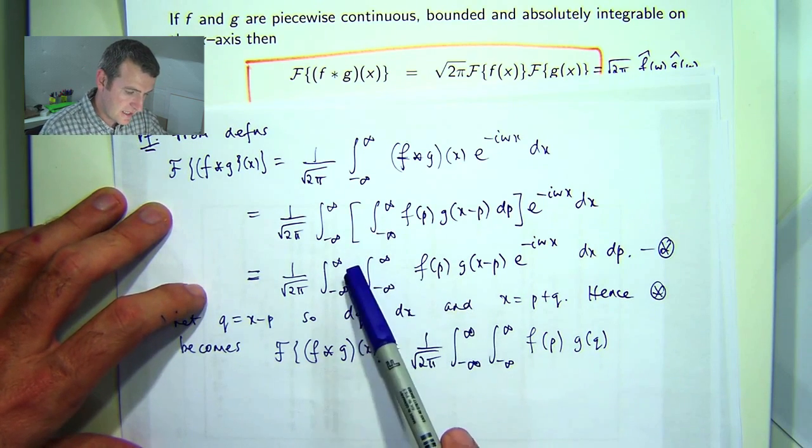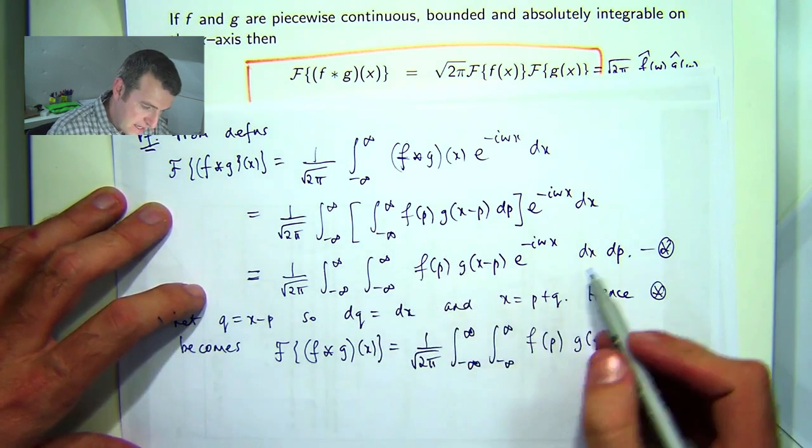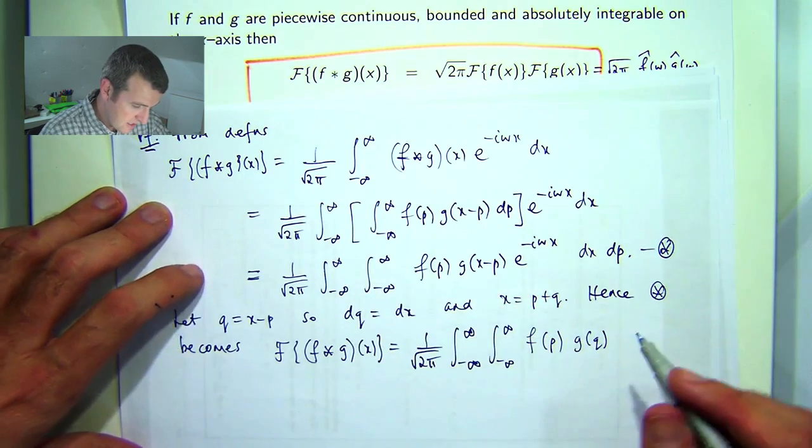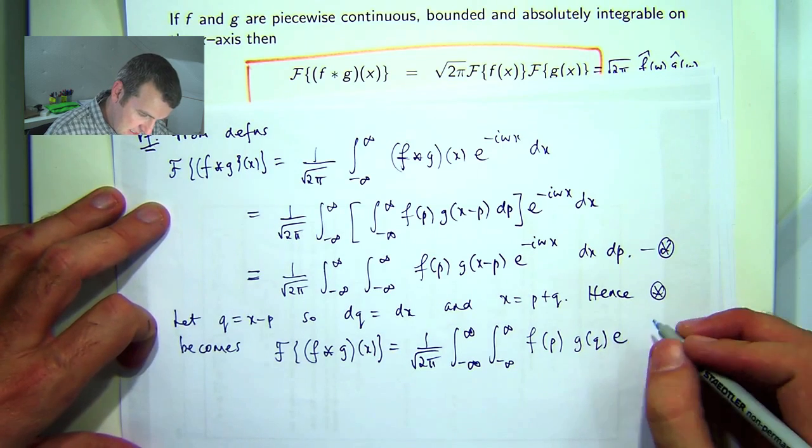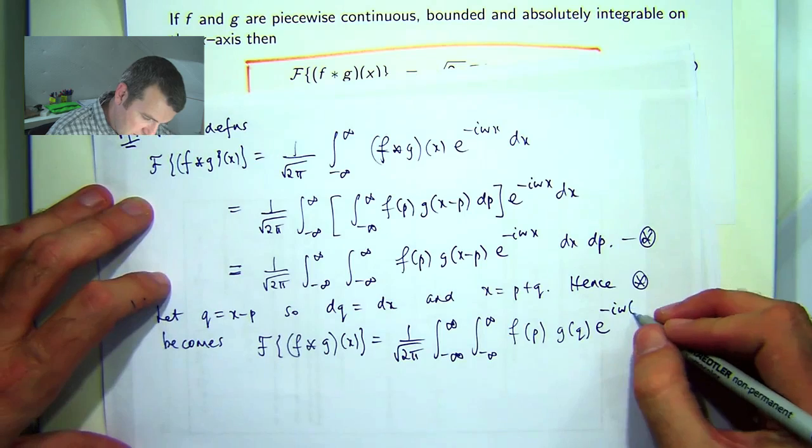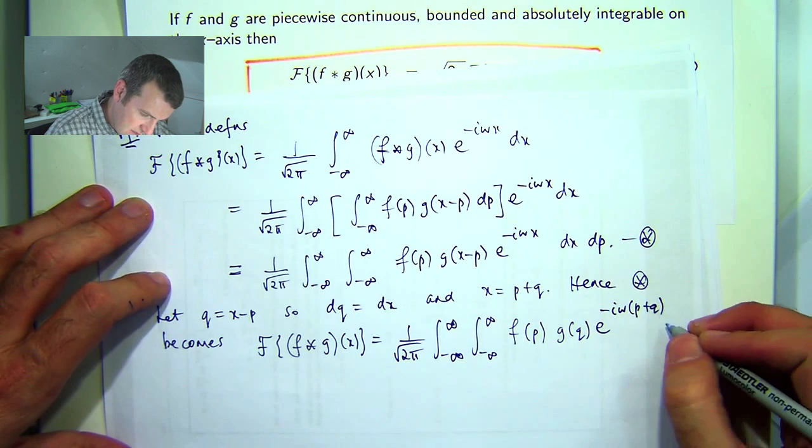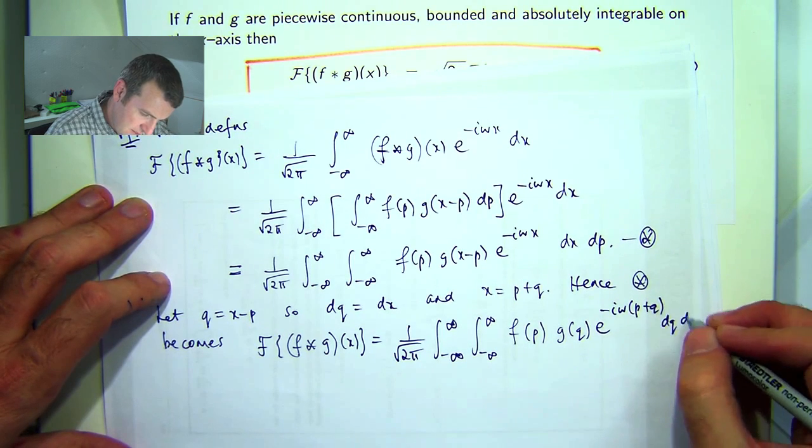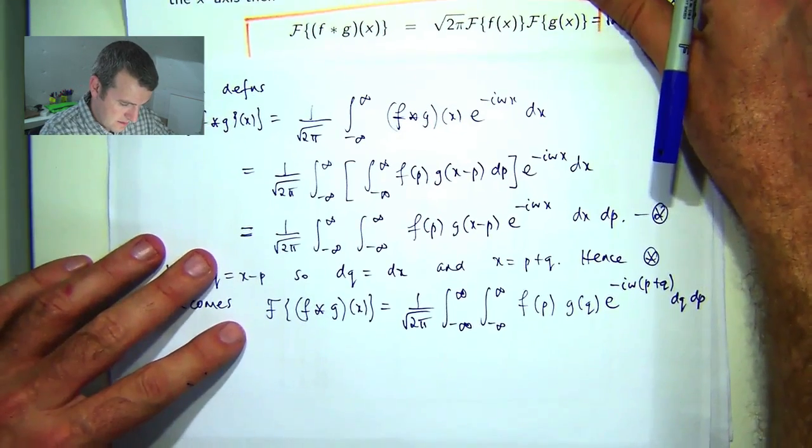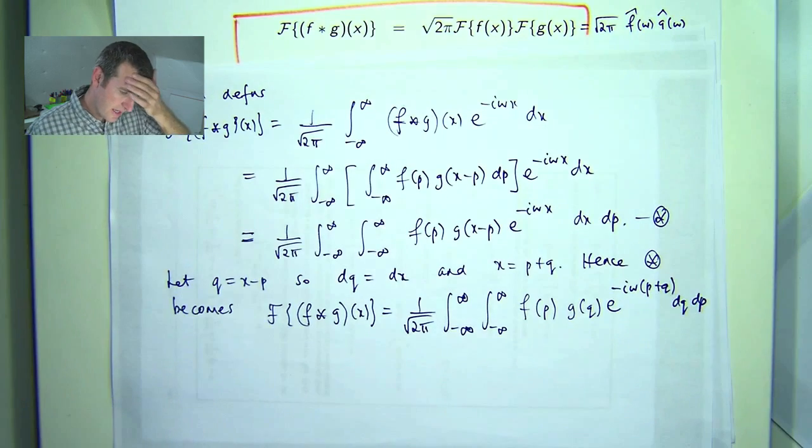Basically if you wanted to get that out of there, you could shift it into here. It's not because f of p has nothing to do with x right out here, so you could shift that out first. And I'm going to get e to the negative i w p plus q. dq, dp.